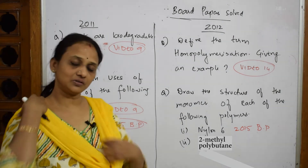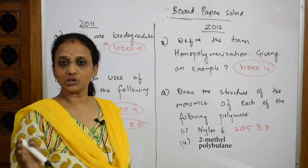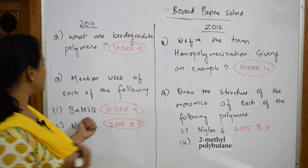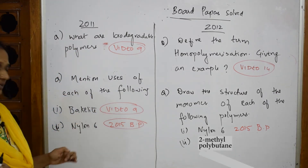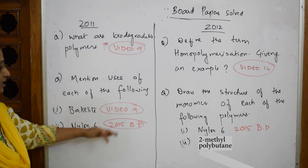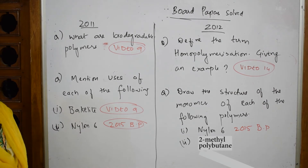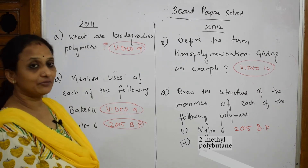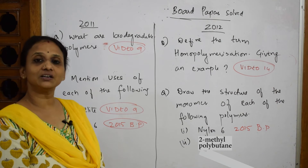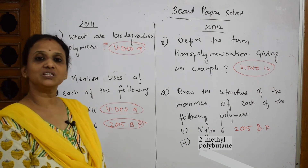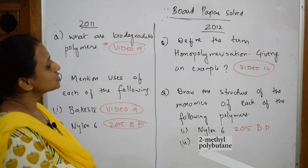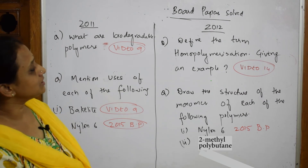They may ask you the structures, monomers, polymers, or the uses. For uses, they've asked for Bakelite, which I covered in video number 9, and Nylon 6, which I've already done in the 2015 board paper with the structure and uses.